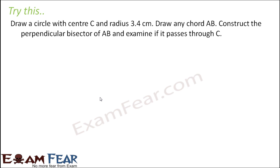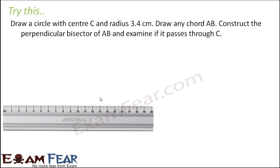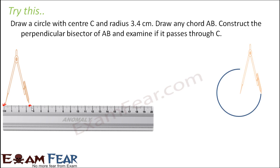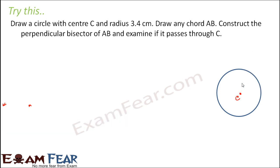Let's try this: draw a circle with center C and radius 3.4 centimeters. First, measure 3.4 centimeters — place the needle end of the compass at zero and the pencil end at 3.4 on the ruler. Then bring the compass to draw the circle. This is our center C and this is the circle.